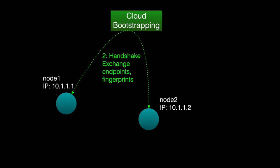Once authenticated, these nodes can use the cloud bootstrapping to send short messages, allowing them to exchange handshake information — the endpoints they need to communicate with, as well as fingerprints used to create an encrypted TLS tunnel between them.